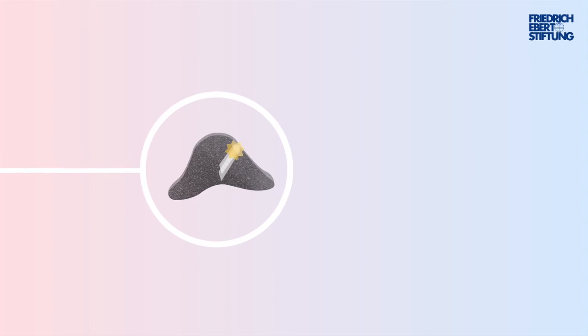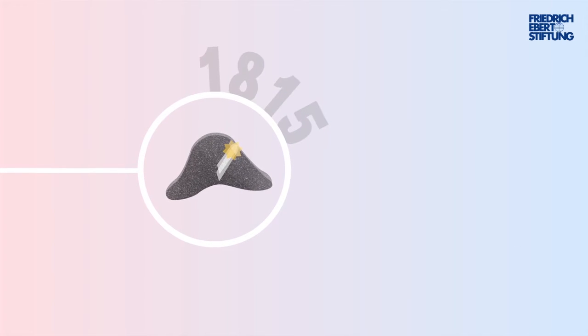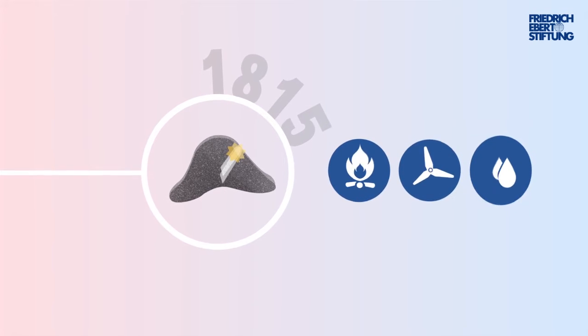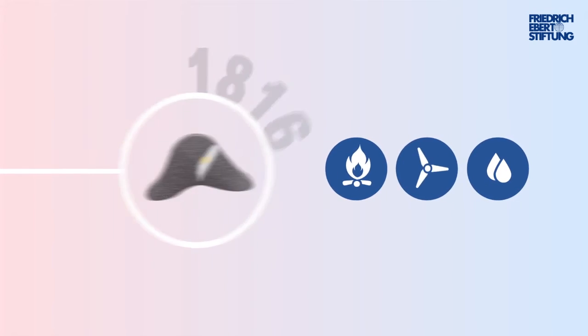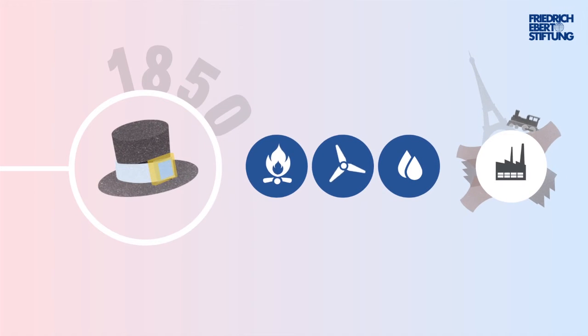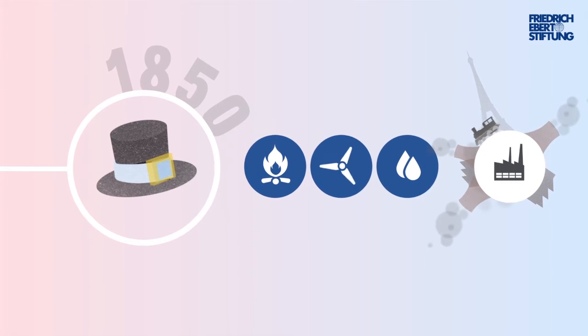Actually, Energiewende processes are really rather old hat. In the past, all our energy came from renewable sources, such as wood, wind, and hydropower. The switch to coal set the ball rolling for industrialization.